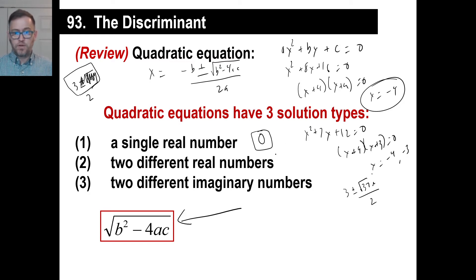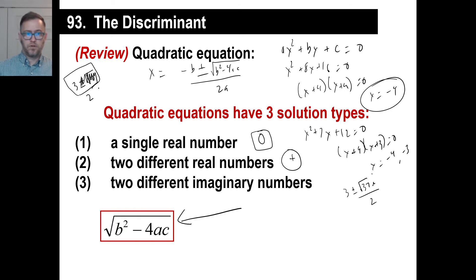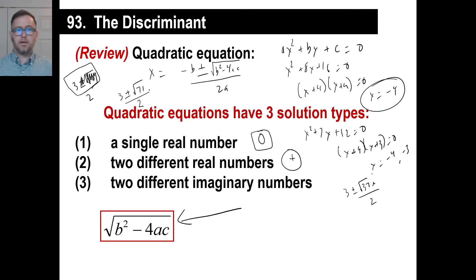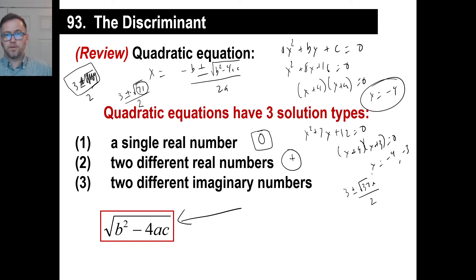If you have two different real numbers as two solutions, then the discriminant will have a positive answer underneath it. You'd get something like 3 plus or minus the square root of 71 over 2. If it's a positive number under the radical, you'll have two answers — 3 plus that, and 3 minus that — and they're both real numbers because they're on the number line somewhere.